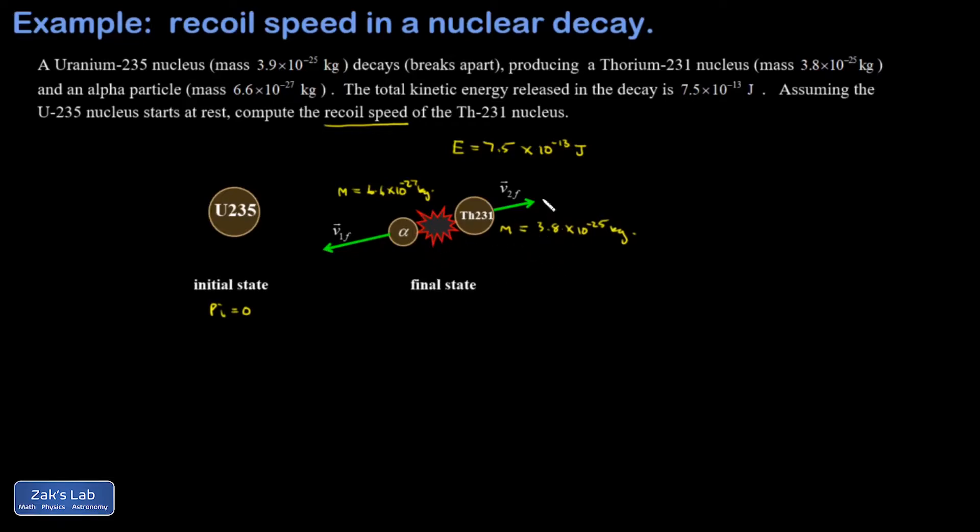When you have this kind of symmetry, you don't need to be real formal about the momentum analysis. I'm just going to say the amount of momentum pointing this way has to equal the amount of momentum pointing that way. So I'm comparing magnitudes of momenta: M alpha V1 final equals M thorium V2 final. And I get my first important equation.